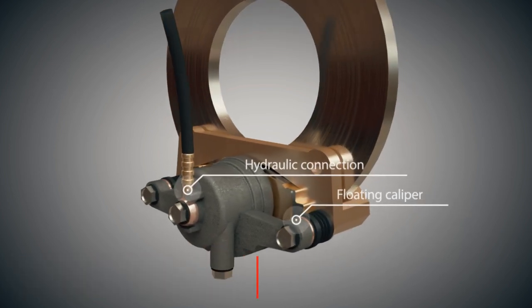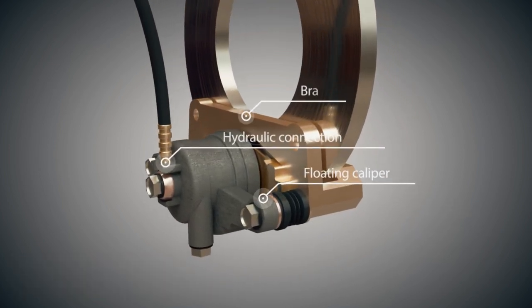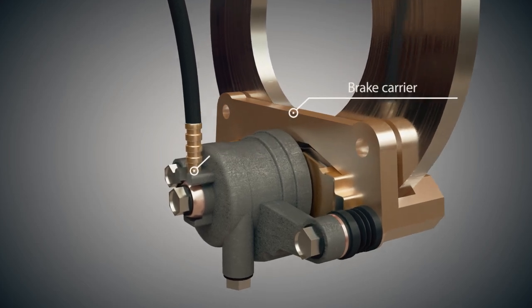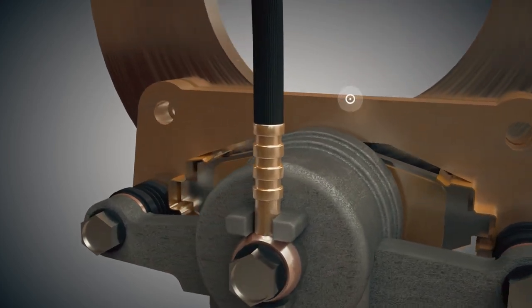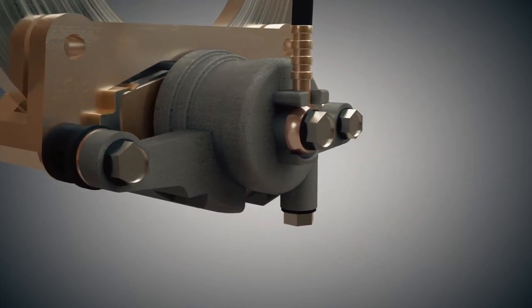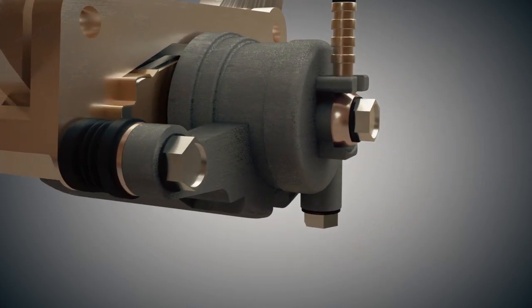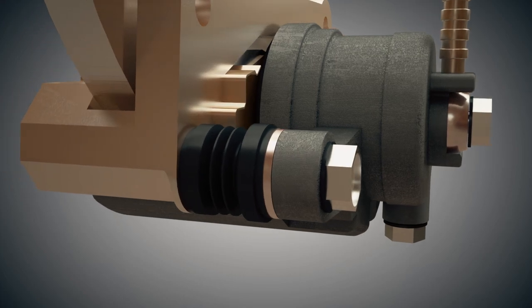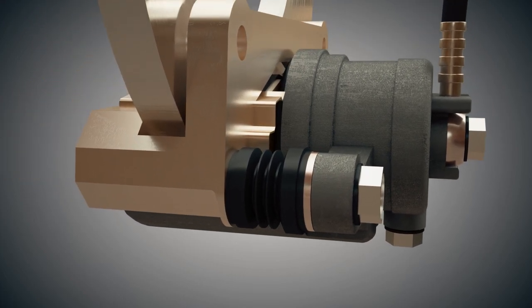The floating caliper brake is composed of a caliper with a hydraulic connection through which the brake is supplied with brake fluid. The caliper is attached to the brake carrier. The brake carrier is rigidly connected to another component of the vehicle.